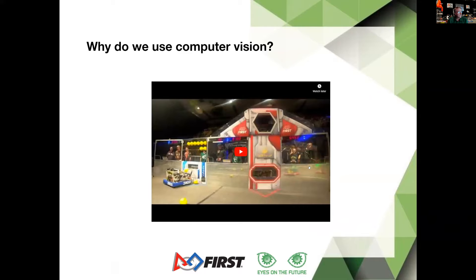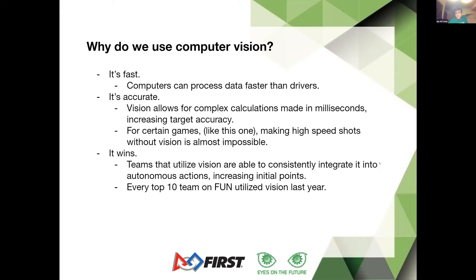Why do we use computer vision? First, it's really fast — computers can process data much faster than drivers, in an average of milliseconds versus drivers who have to manually align and use what they can to shoot targets, especially this year with targets more than 30 feet away. Vision is really accurate, allows for complex calculations in milliseconds, and increases target accuracy. I think every top 10 team uses vision.